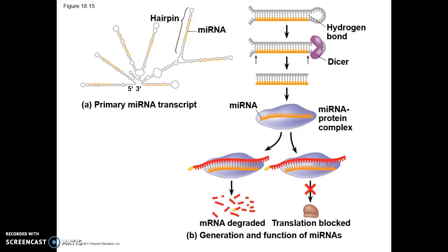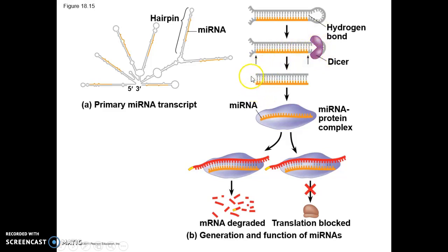Initially, the hairpins get cut away from the precursor. Once the hairpin is cleaved, it is then further trimmed by an enzyme called dicer. Dicer trims this into shorter segments, and then one of the two strands gets degraded. The remaining strand is the micro RNA, which will then form a complex with nearby proteins.